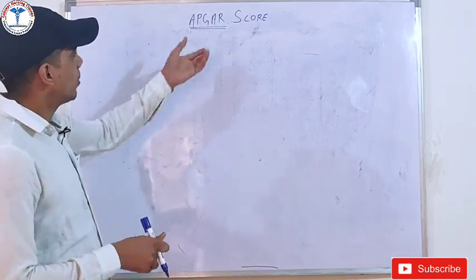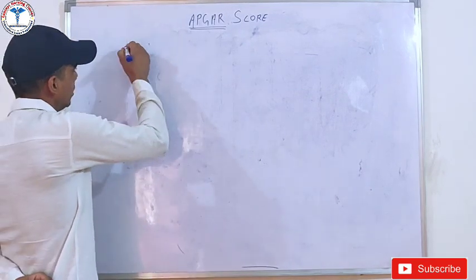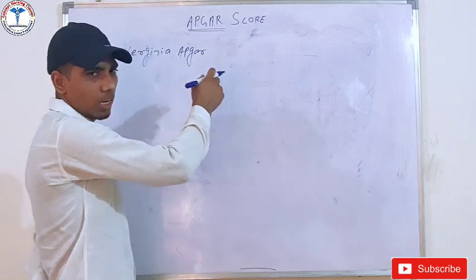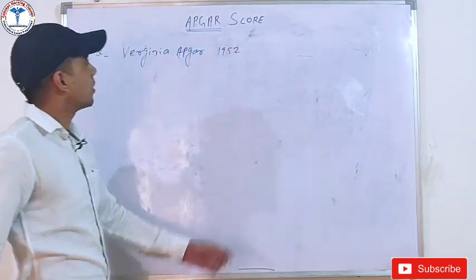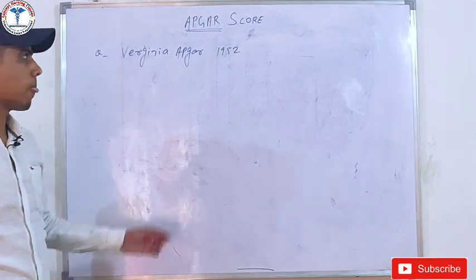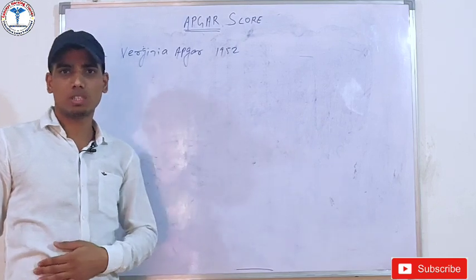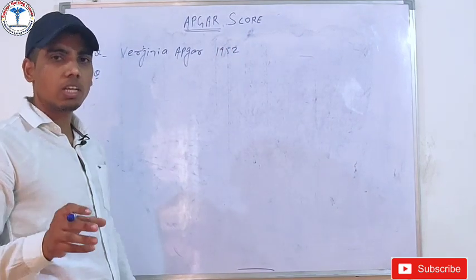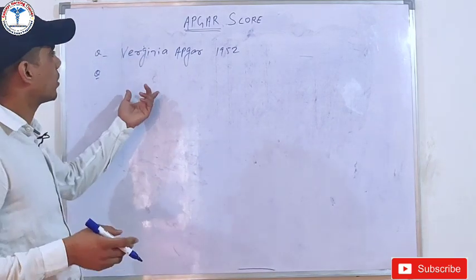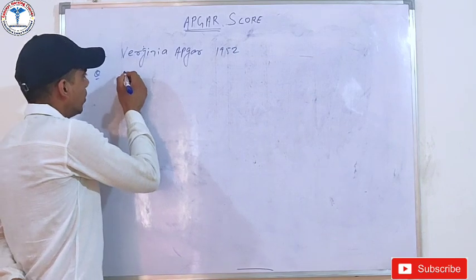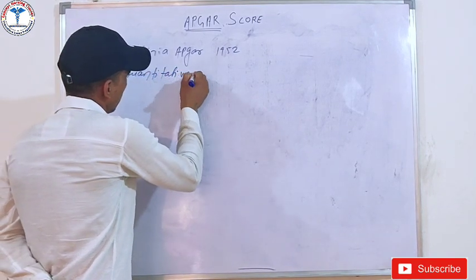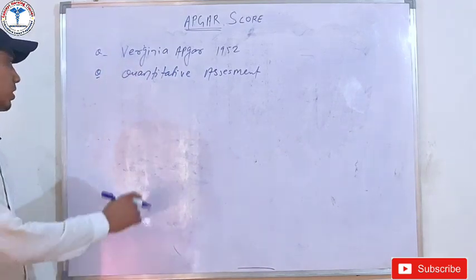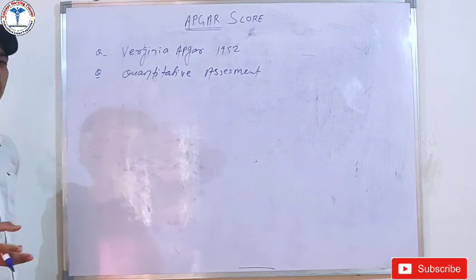One question comes from Apgar Score. This score was developed by the scientist Virginia Apgar in 1952. This is a quantitative assessment. There are 5 parameters and 5 criteria used in this scoring system.